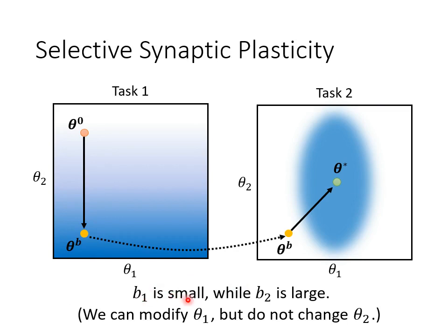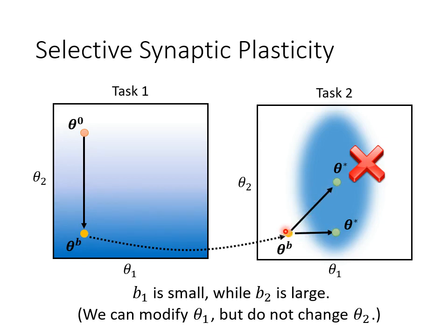What happens if we set a smaller b1 and a larger b2? When learning Task 2, since b1 is small, we can update the model freely along the θ1 direction. Since b2 is large, it's hard to update along the θ2 direction. So the gradient direction is modified — instead of moving upper right, θB moves in a direction that changes only θ1 and leaves θ2 alone, producing θ*. Using this θ* on Task 1 shows only small changes in loss, preventing degradation on Task 1.